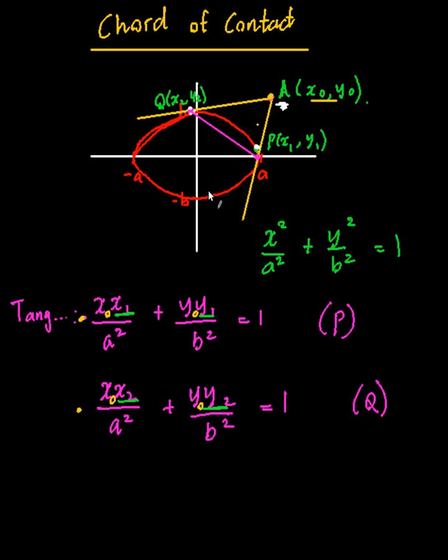But also for the chord of contact, x1, y1 and x2, y2 satisfy this equation. So basically I need to be able to plug in x1, y1 or x2 and y2 and be able to satisfy either of these two things.